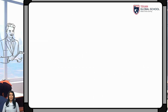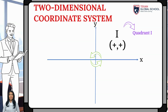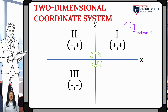The regions of the plane are called quadrants, and there are four quadrants in the plane. The order of the quadrants is given in a counterclockwise direction. In quadrant 1, both abscissas and ordinates are positive. In quadrant 2, the abscissas are negative and the ordinates are positive. In quadrant 3, both the abscissas and the ordinates are negative. In quadrant 4, the abscissas are positive and the ordinates are negative.